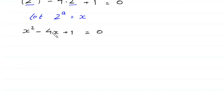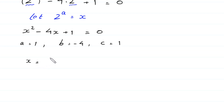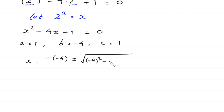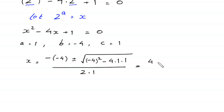This quadratic can be solved using the quadratic formula. Here a equals 1, b equals negative 4, and c equals 1. So x equals negative b, which is positive 4, plus or minus the square root of b squared (which is 16) minus 4 times 1 times 1, all divided by 2 times 1.